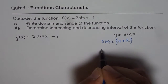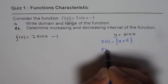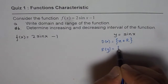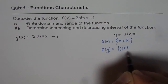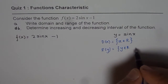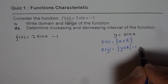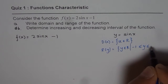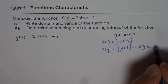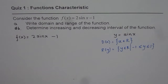How about the range? The range is y belongs to real numbers, but y is between plus and minus 1. So we say y is greater than or equal to −1 and less than or equal to 1. That is the domain and range of the parent function.